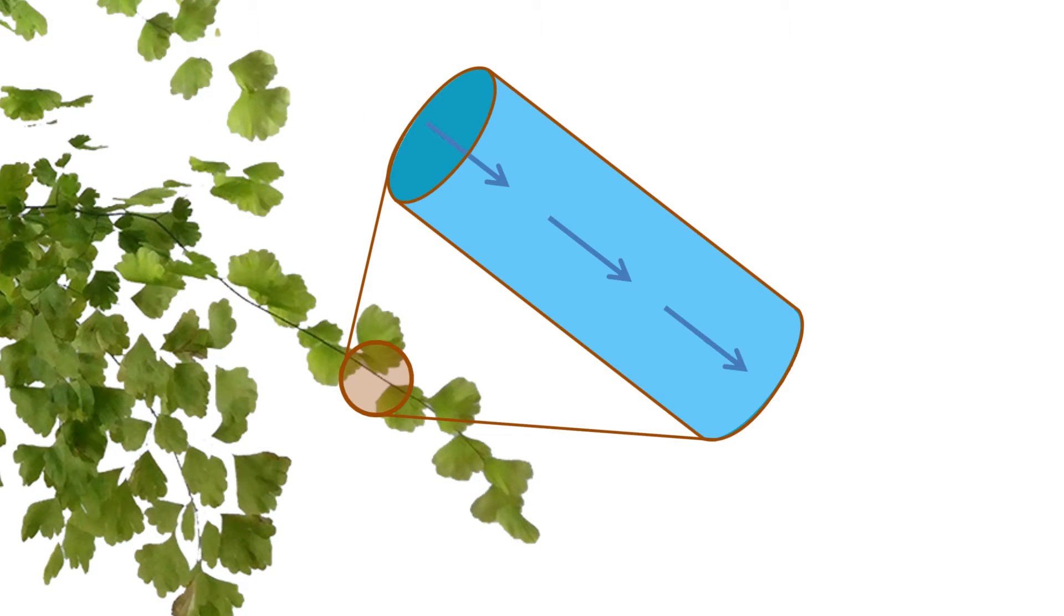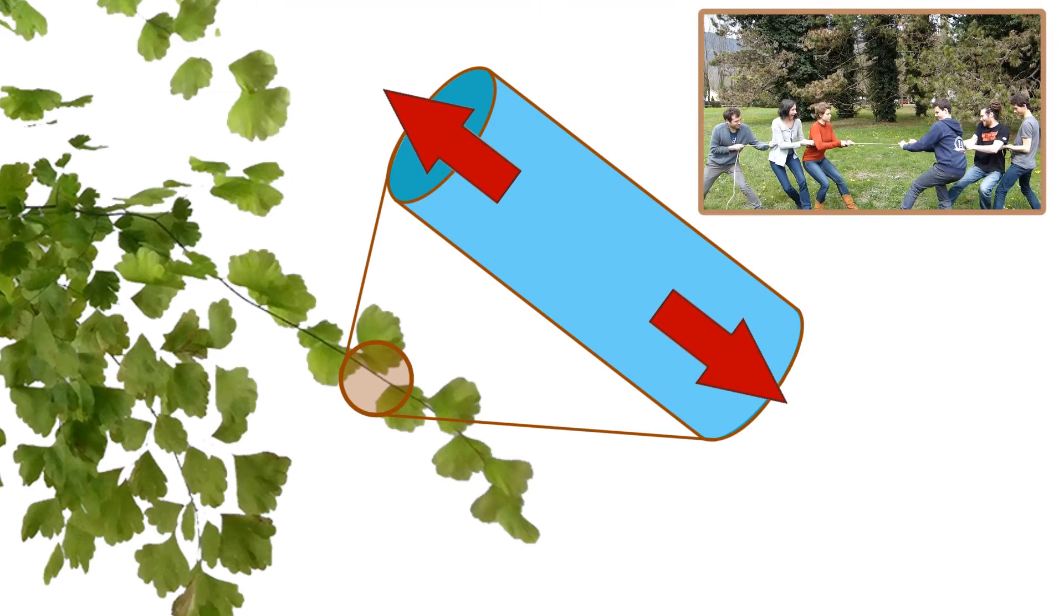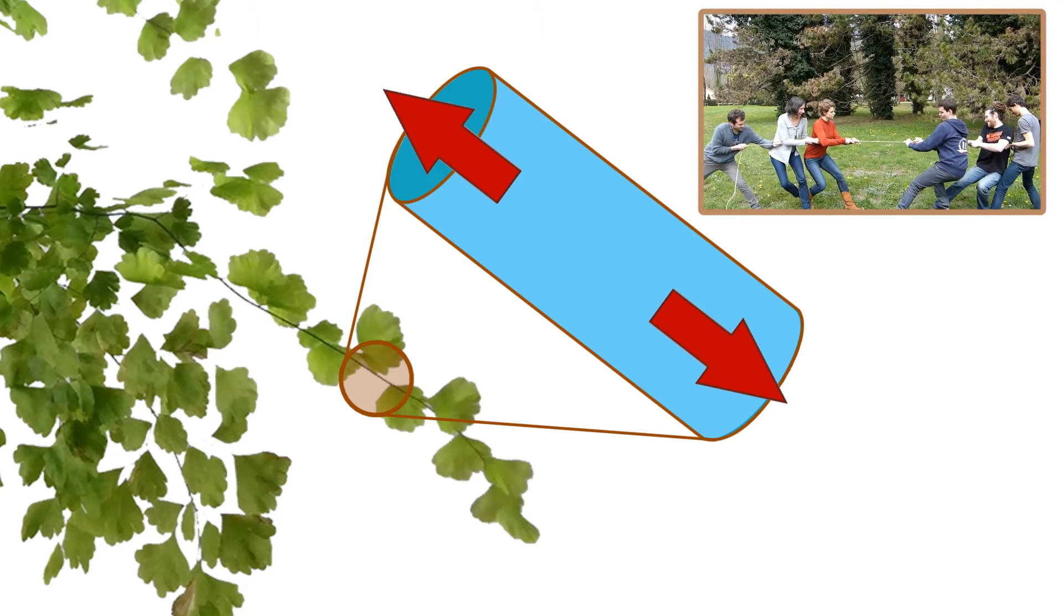During a period of drought, if the water lost by evaporation up there in the leaves is not compensated by the volume sucked in at the root level, the sap column may be under excessive tension and break.